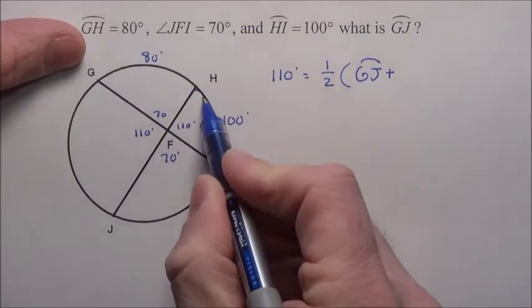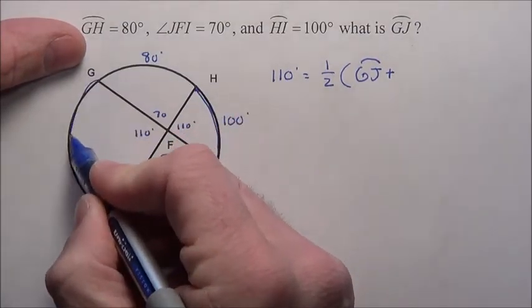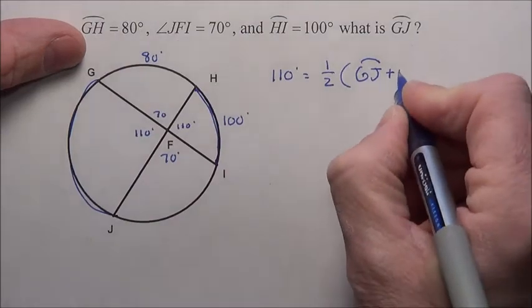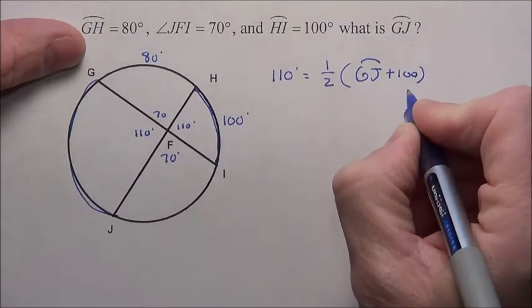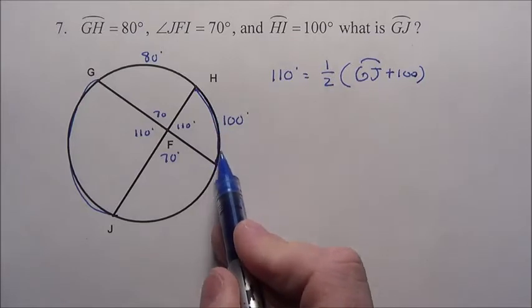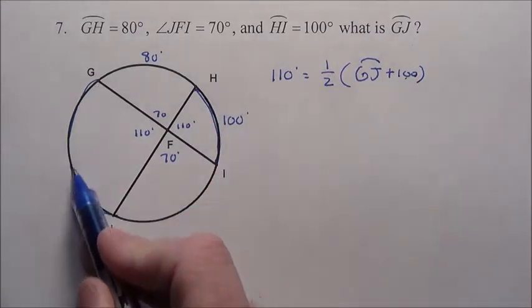Remember, we get these angles by adding the 100 plus this angle here, and then multiplying by a half. So we did this 100, which I have right here, plus this unknown,